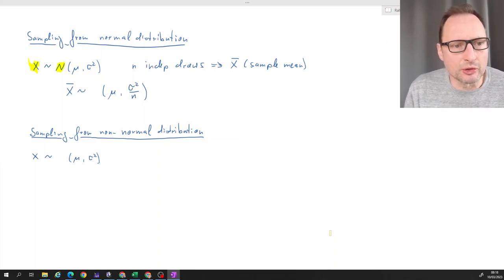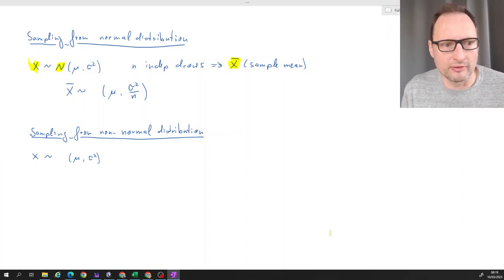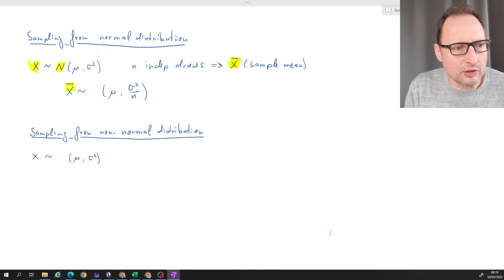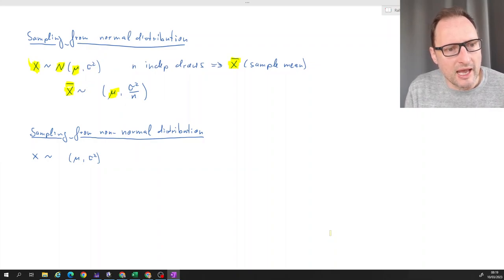Let's draw n independent draws from that random variable and calculate x̄, the sample mean. We know that is also a random variable and previously we figured out that the expected value of this random variable is also μ, the same expected value as our individual draws, and the variance is σ²/n. So it's related to this variance but it gets smaller and smaller with the sample size.